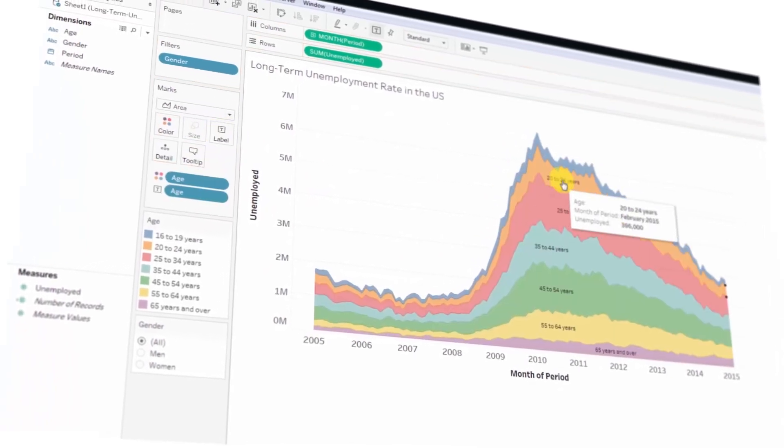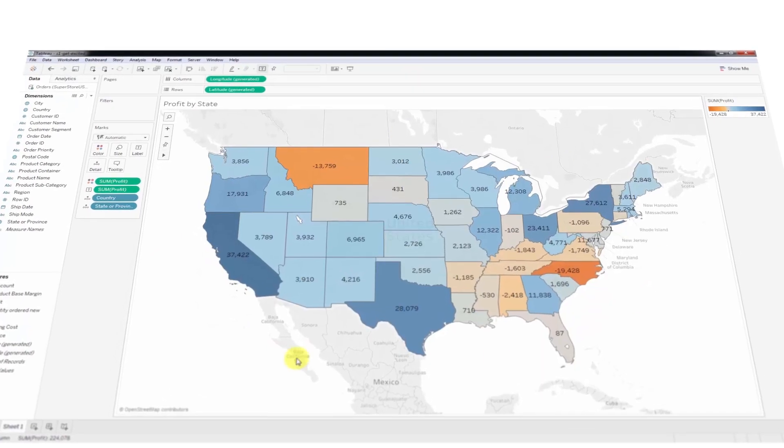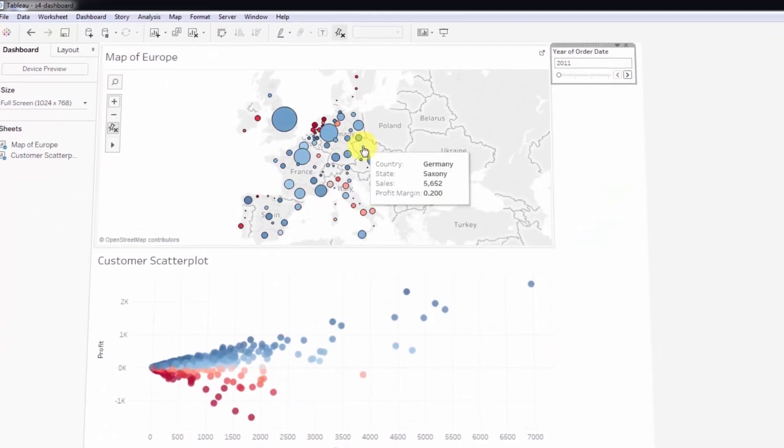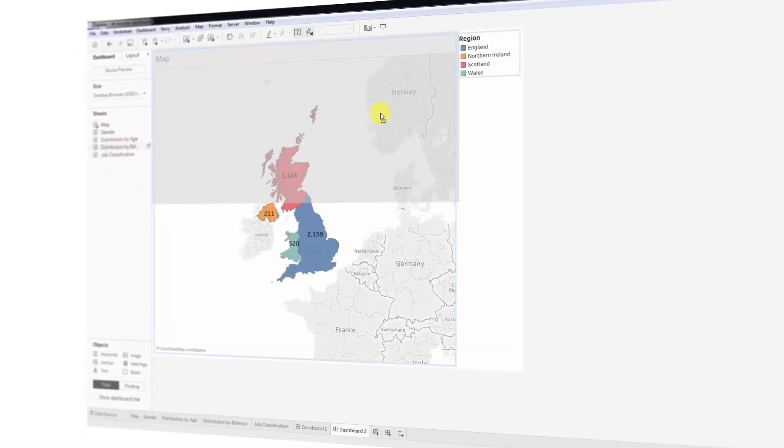Right there we turned our line chart into an area chart and we're adding some labels to make it look fantastic. We will work with maps, lots of different maps of the US, UK. We'll add scatter plots to those maps and I'll show you how to include those maps in powerful dashboards.